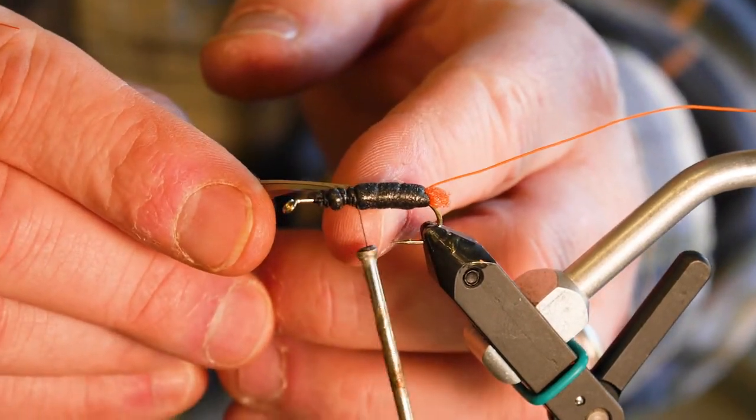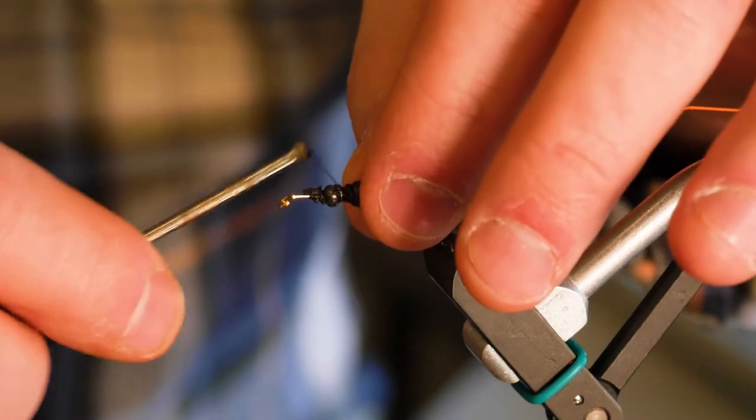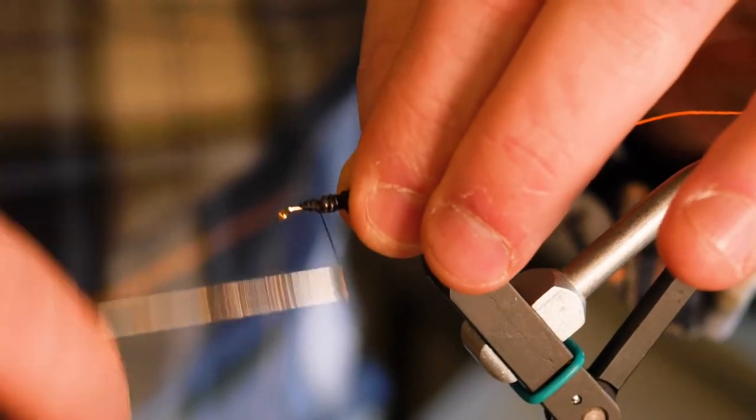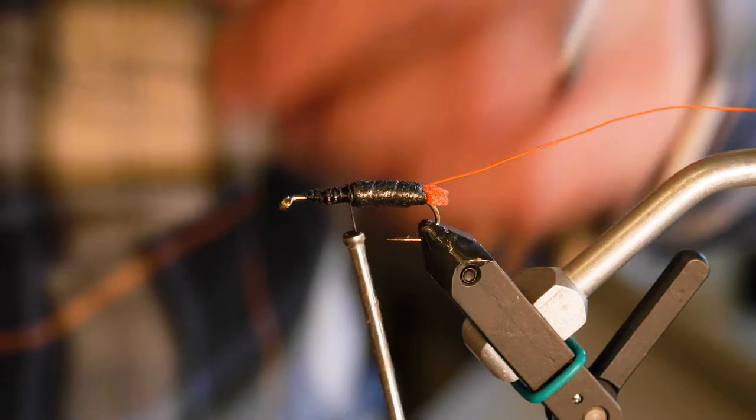And I'm coming back to here. There's my hook eye. Coming back to right here. That's, I don't know, half inch or so. Got to have room for the head.